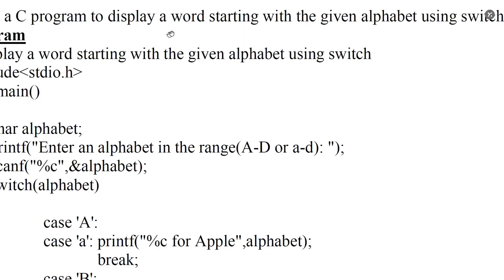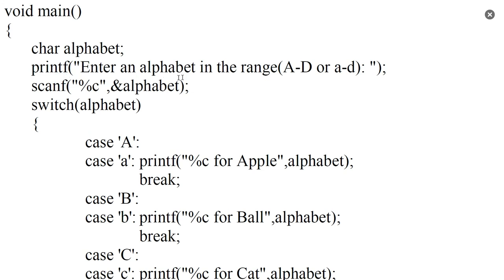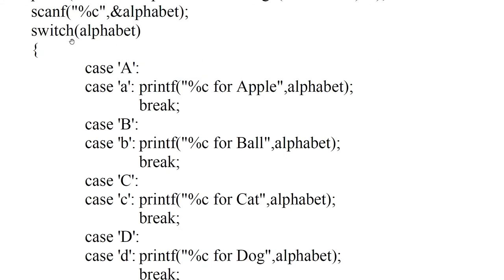Write a C program to display a word starting with the given alphabet using switch statement. Print: enter an alphabet in the range capital A to D or small letter A to D. The user enters one alphabet character, which is read into the character variable alphabet. Then a switch statement is used, switching on alphabet.